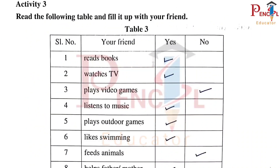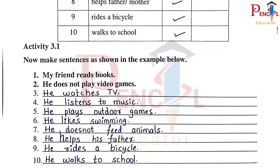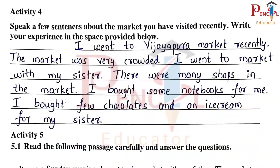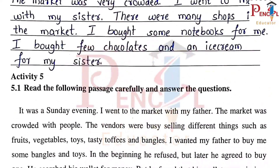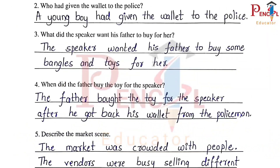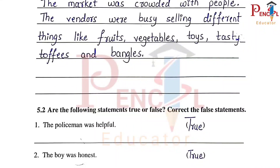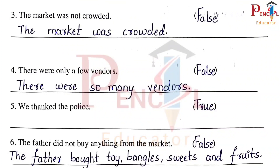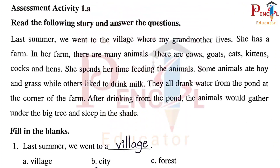Activity 3, Table 3, Activity 3.1, Activity 4 — A Visit to Market. Six characters are mentioned in the passage. First and second one are true. Third and fourth one are false. Fifth is true. Sixth is false.